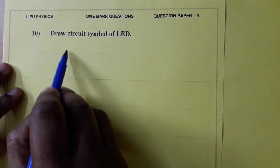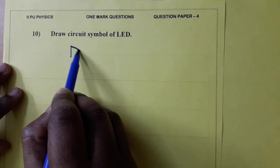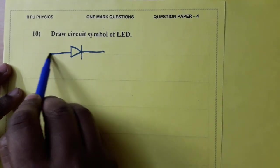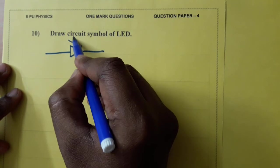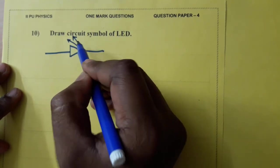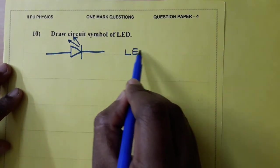Draw circuit symbol of LED. LED triangle with a line, light emitting diode. So, light is emitted, arrow mark should be outward. This is for LED.